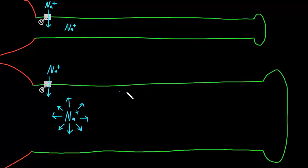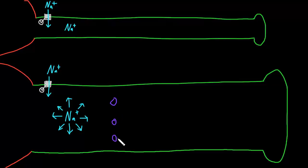First, there's the membrane of the axon, and then there are all sorts of structures in the cytoplasm of the axon, such as vesicles or large proteins. And then there are filaments, and there are tubules, and there are all sorts of structures in the cytoplasm that would pose an obstacle to the movement of this sodium ion.